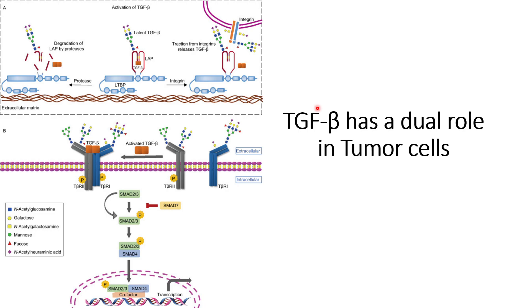These are some of the ways by which TGF-beta acts as both a tumor suppressor and a tumor promoter. For more details on TGF-beta's dual role in tumor cells, you can refer to the reference provided in the description. That's all for this video — thank you for your time.